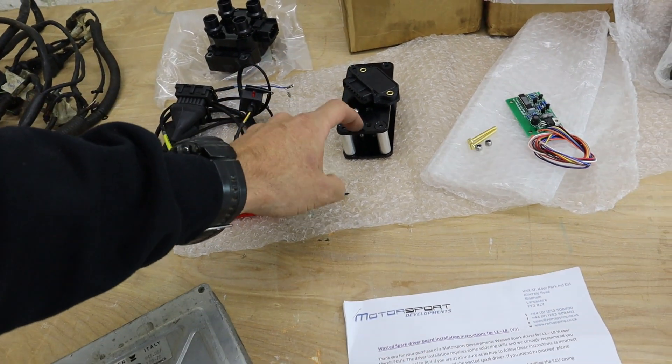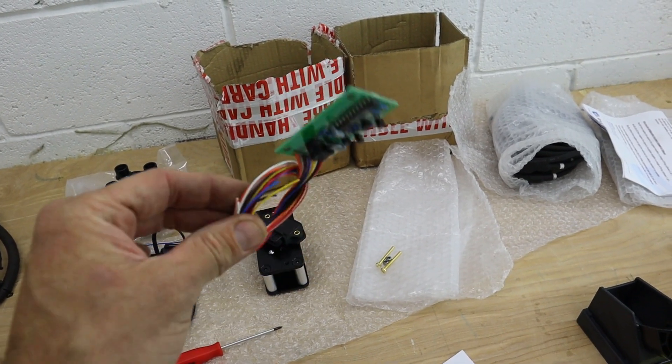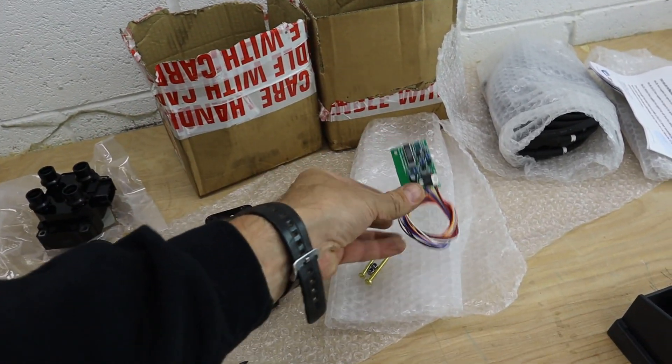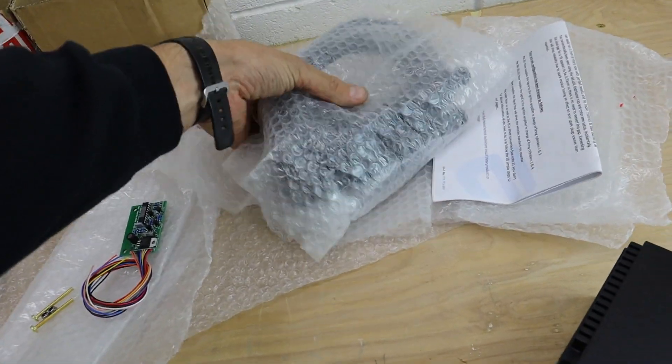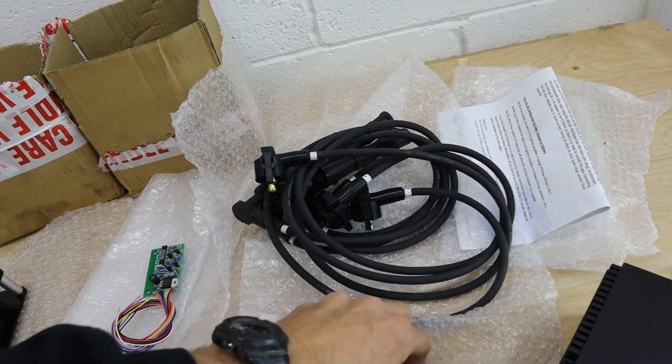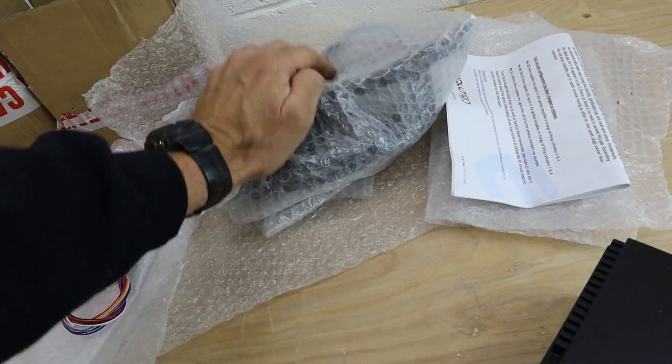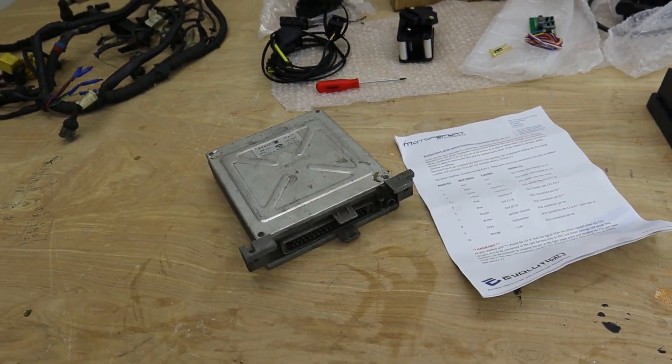The kit that we're going to be using to do the Wasted Spark comes from Motorsport Developments. It's really good to be honest. The whole kit, you get very good instructions where they tell you the pin outs, they tell you exactly what to cut. They even give you diagrams on the actual insides of the ECU so you can see if you're going right. With the whole kit you get the coil pack which is brand new, you get the coil pack wiring harness. You get the ignition amplifiers and the heat sink bracket. This is the Wasted Spark driver board here and that's what will be installing inside the ECU. So let's get inside this and have a look.